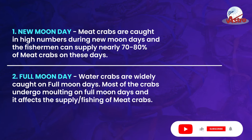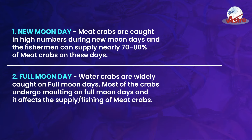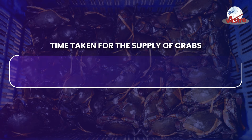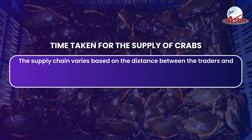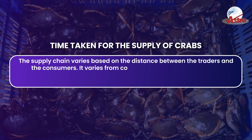On new moon and full moon days, fishermen can catch more crabs, which explains the larger and lesser supply fluctuations. Fishermen must overcome all these conditions to maintain a continuous supply. During new moon days, meat crabs are caught in high numbers, and fishermen can supply nearly 70 to 80 percent of meat crabs on these days.